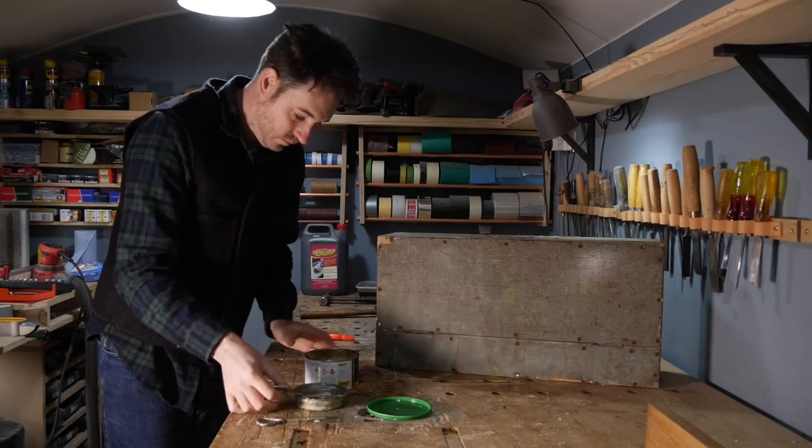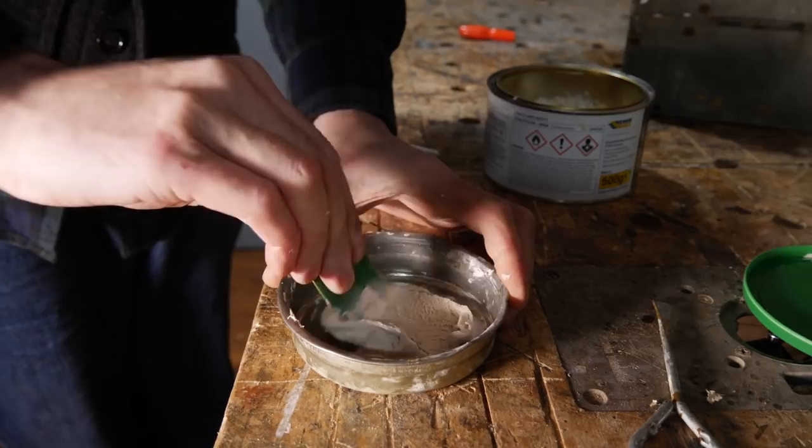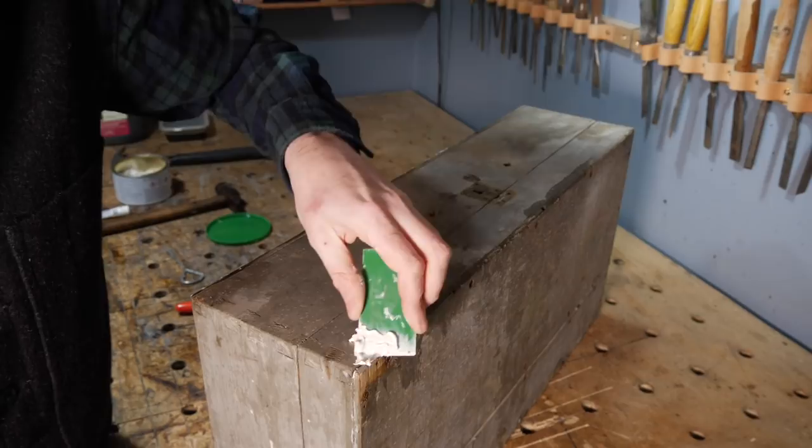All the loose bits of ply are glued back on, but there's a few bits missing that I think might cause it to split in the future, so I'm just going to get them covered up with some filler. This is some two-part filler which dries incredibly hard. So I just get some of that mixed up and then spread into all the cracks.